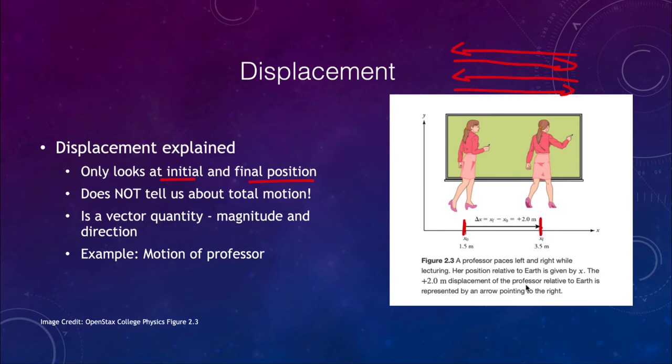However, their net motion is only given by their initial position where they started and their final position. So in this case, the displacement is two meters, even though the professor may have walked many more meters than that during the course of a lecture. So displacement is one of the examples of a vector quantity. It has a magnitude, which is how far, in this case two meters, but it also has a direction. So it would be two meters to the right.